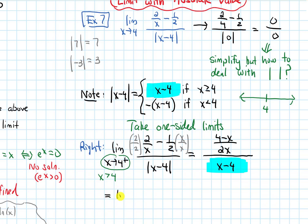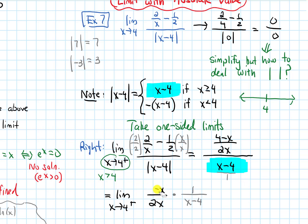Let's simplify further. We get the limit as x approaches 4 from the right of (4 minus x over 2x) divided by (x minus 4 over 1). Dividing by that fraction is the same as multiplying by the reciprocal, 1 over (x minus 4). Now 4 minus x and x minus 4 are almost the same — factoring a negative out of the numerator gives negative (x minus 4), and the (x minus 4) terms cancel. Plugging in 4, we're left with negative 1 over 2 times 4, which is negative 1 over 8.